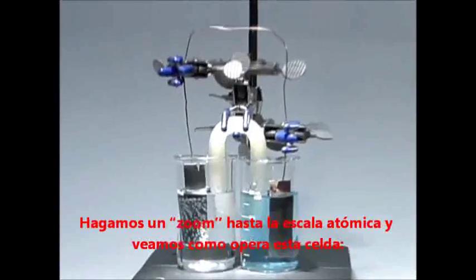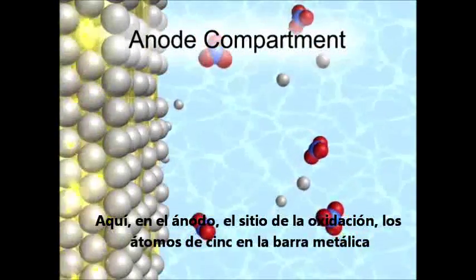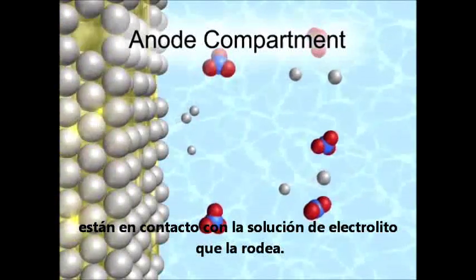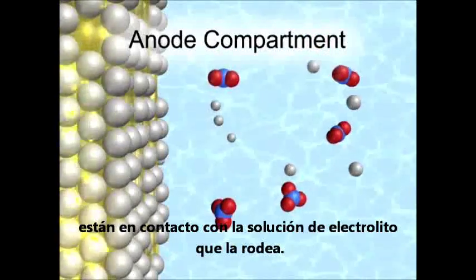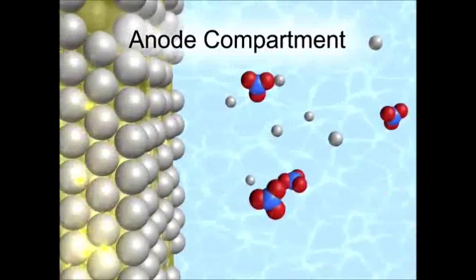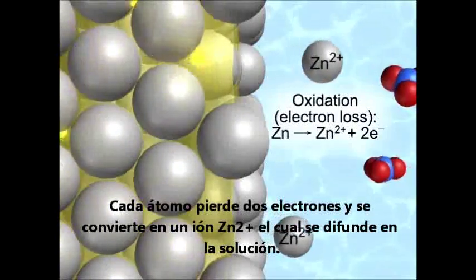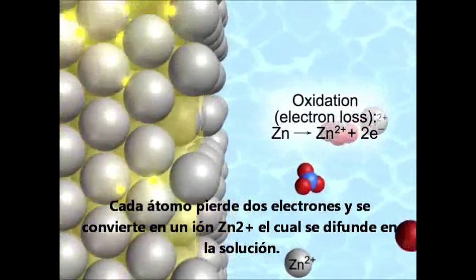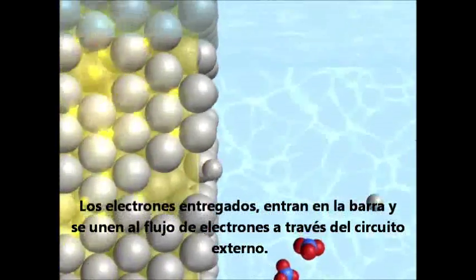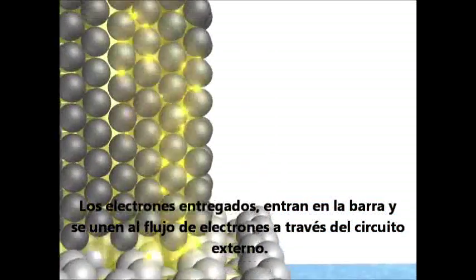Let's zoom into the atomic scale and see how this cell operates. Here, at the anode — the site of oxidation — zinc atoms in the metal bar are in contact with the surrounding electrolyte solution. Each atom loses two electrons and becomes a zinc ion, which diffuses into the solution. The electrons given up enter the bar and join the flow of electrons up toward the external circuit.